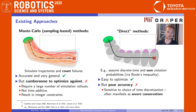Consider what happens as we refine this discretization. More time steps are added, and therefore more violation probability will be accumulated. Rather than becoming more accurate, the ensuing risk estimate will diverge to infinity. For this reason, existing direct methods based on Boole's inequality are often severely conservative in practice.